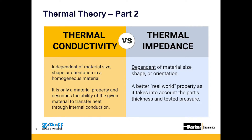Thermal conductivity and thermal impedance are the two properties most commonly used to describe TIM performance. Thermal conductivity is a bulk material property used to compare the ability of a material to transfer heat, and is most commonly used to compare across competitive materials. Thermal impedance is a real-world property that demonstrates material performance based on part thickness and application-specific pressure. It takes into account thermal contact resistance, which is the decrease in thermal transferability at the interface between the TIM and the heat-generating component.